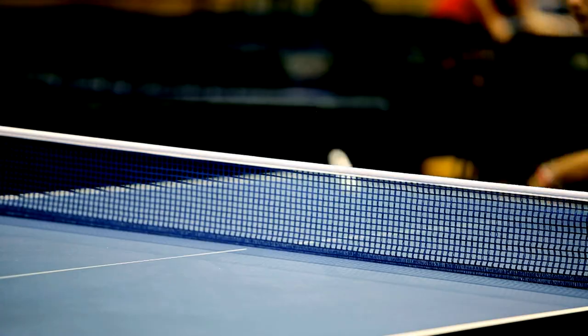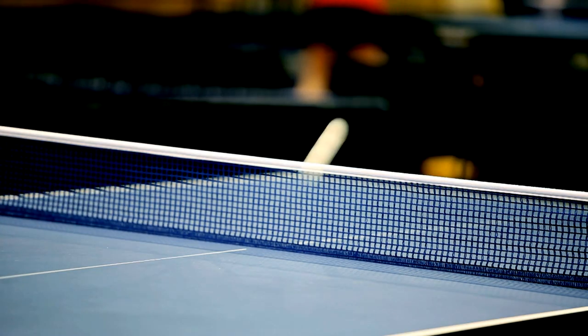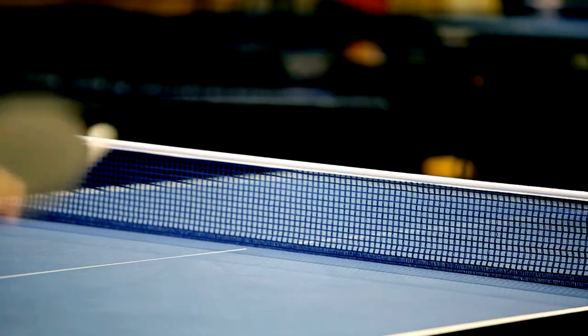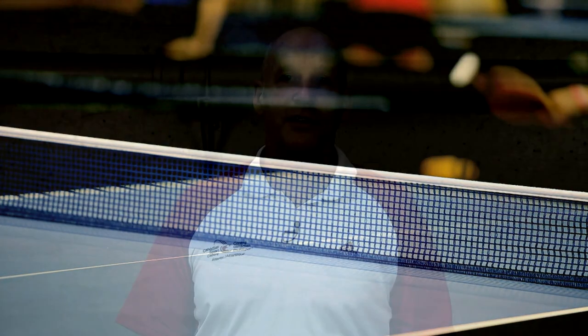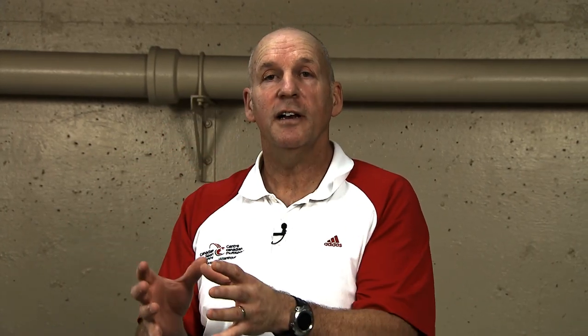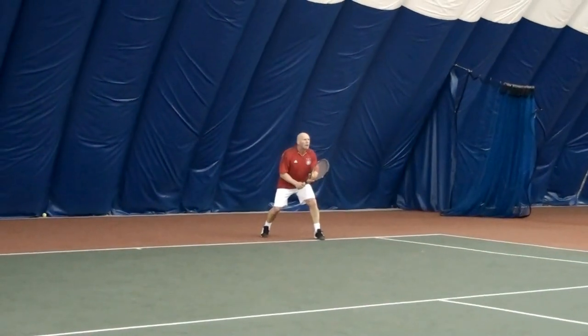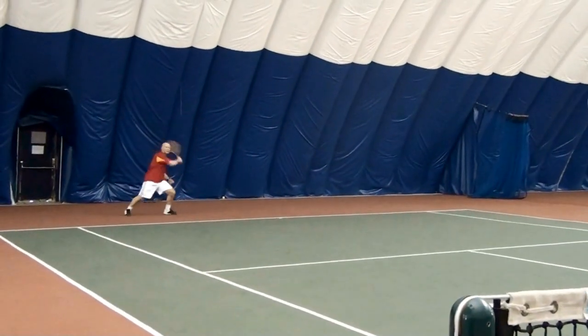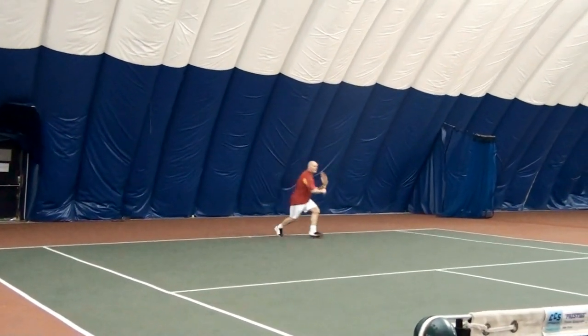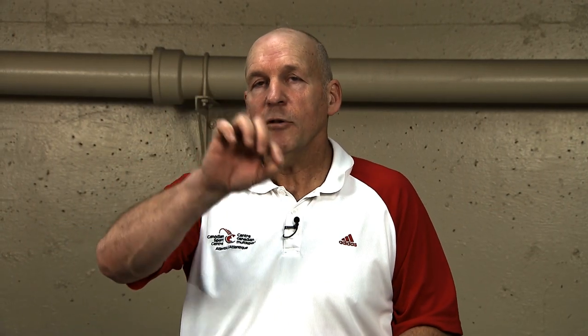In racquet sports, the fastest sports are those with the smallest implements. Table tennis and badminton players move very fast. Moving to squash, you have a slightly larger racquet and heavier ball — they move fast, but not as fast as badminton players. Tennis players have high racquet speed, but not as high as smaller implement sports because a tennis ball is heavier than a badminton shuttle.